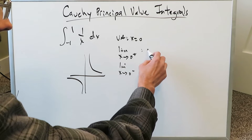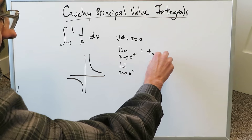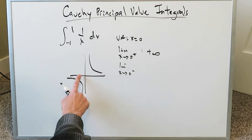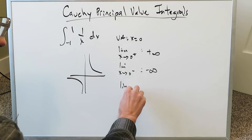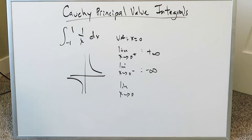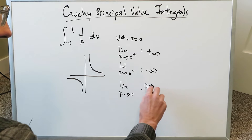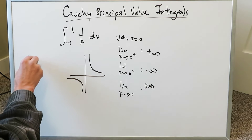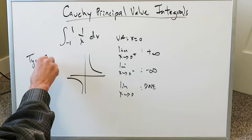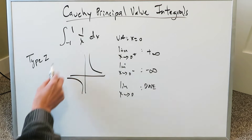The limit would not exist, though you could say it approaches positive infinity. The limit as x approaches 0 from the left approaches negative infinity. But in general, the limit as x approaches 0 does not exist, because the right-hand and left-hand limits are not the same. So technically, for these type 2 improper integrals where you have an infinite discontinuity — and we do have it right here.